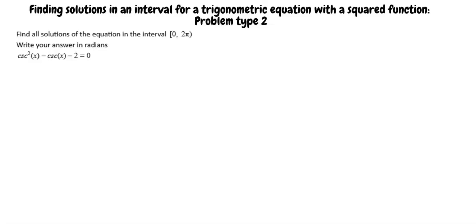This is an example video for finding solutions in an interval for a trigonometric equation with a squared function, problem type 2. Let's start with an example. Find all solutions of the equation in the interval 0 to 2 pi. Write your answer in radians.